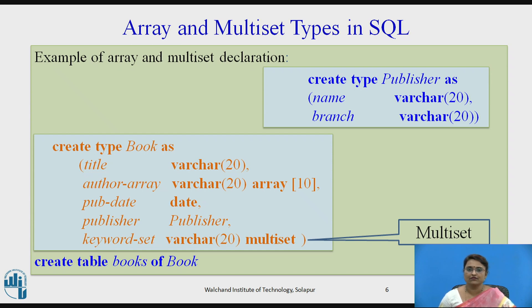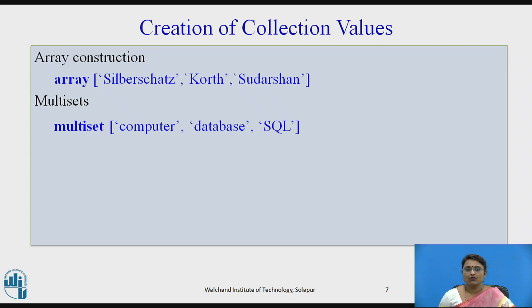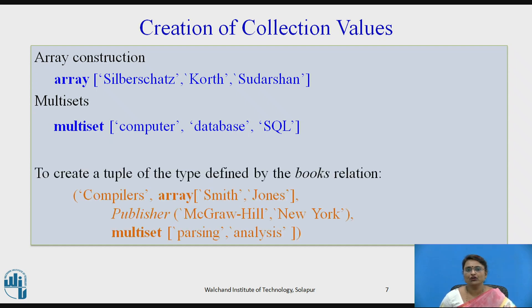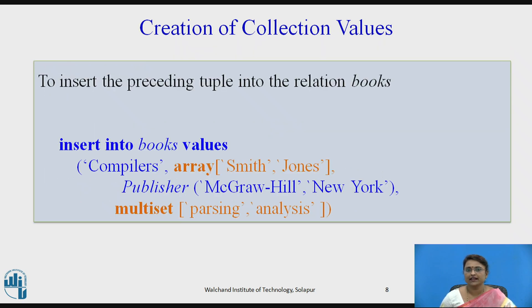Whenever we are creating collection values, the construction is done as shown: 'array' is used for the author array, and whatever authors are listed there are included. For multiset, the 'keyword multiset' is used, and comma-separated contents are provided in brackets. If we want to create the table based on this type and insert values, the order is: first title, then author array, then publisher information, then the multiset data.